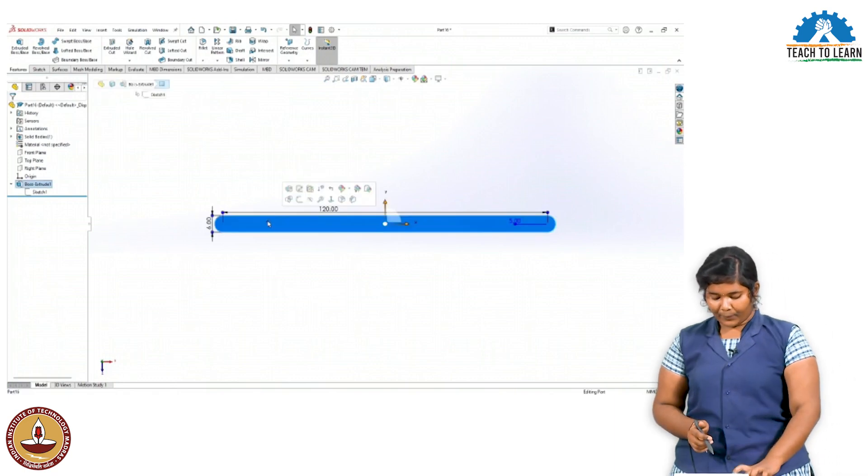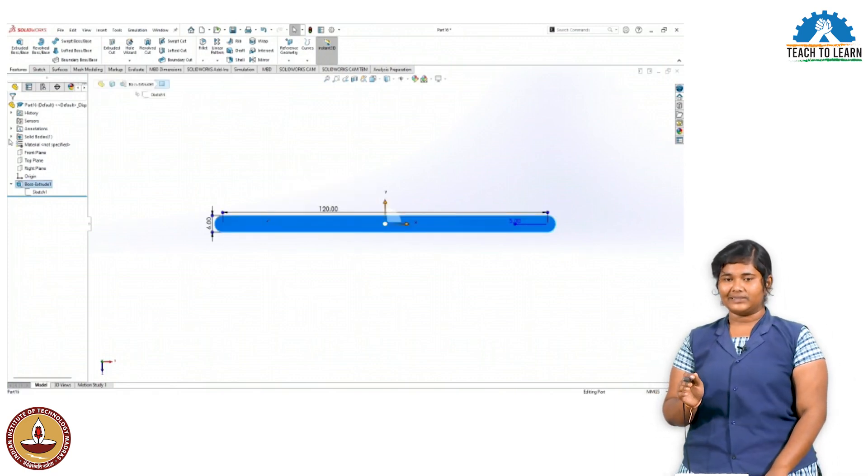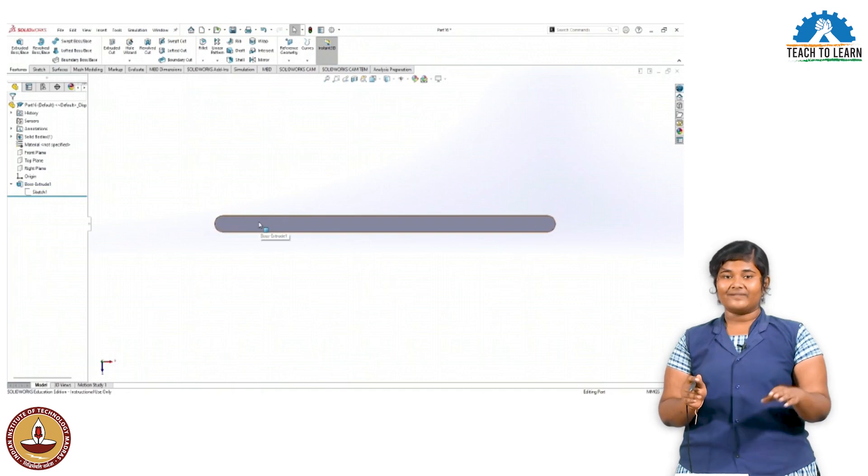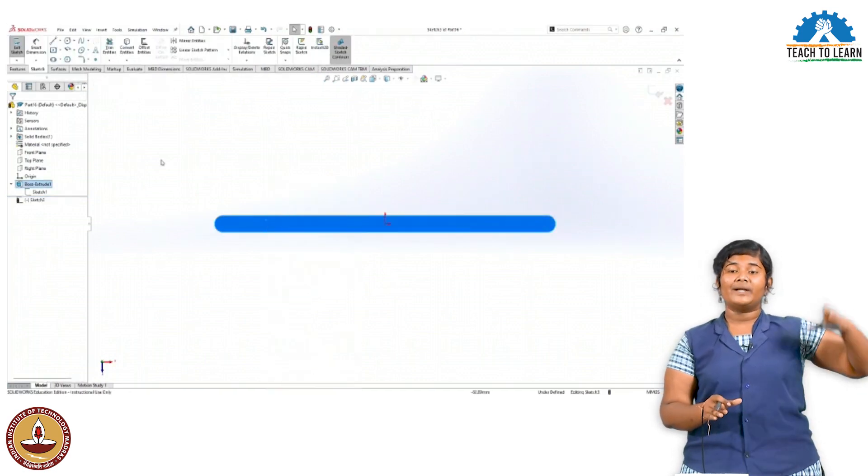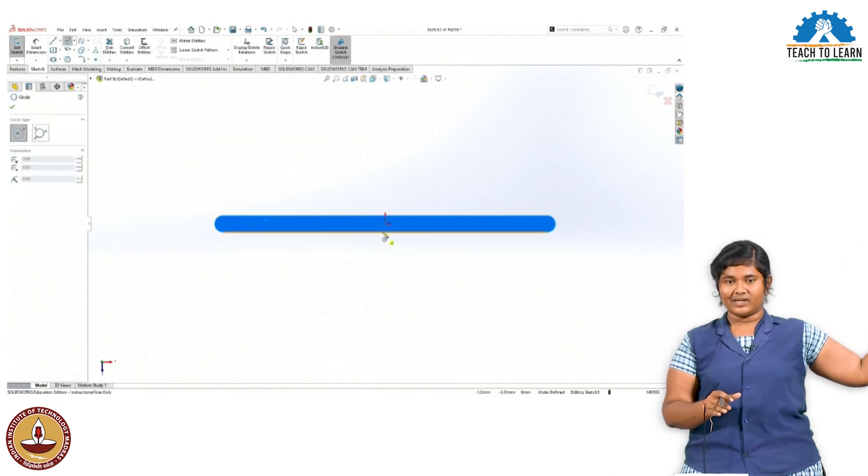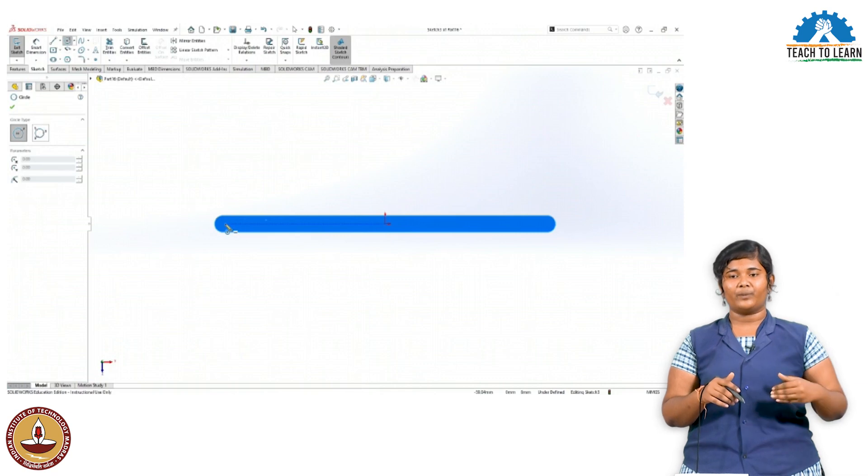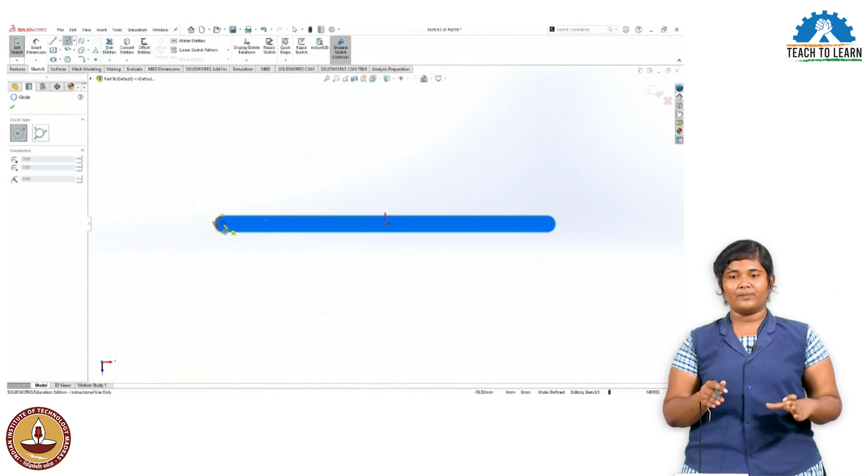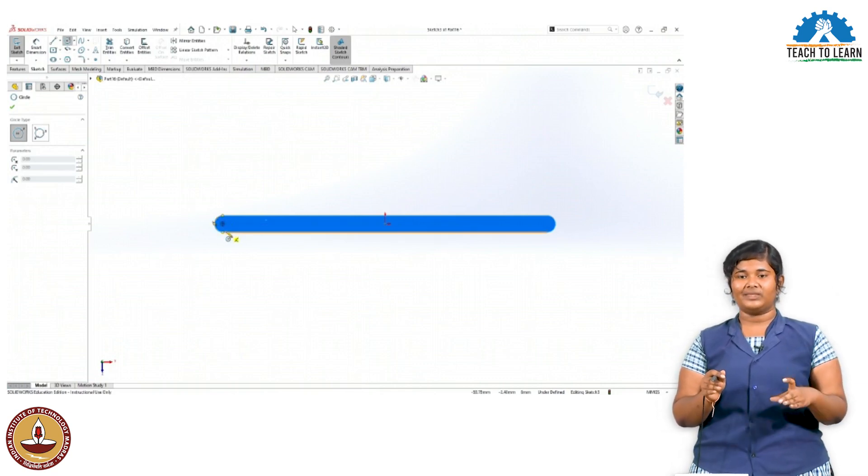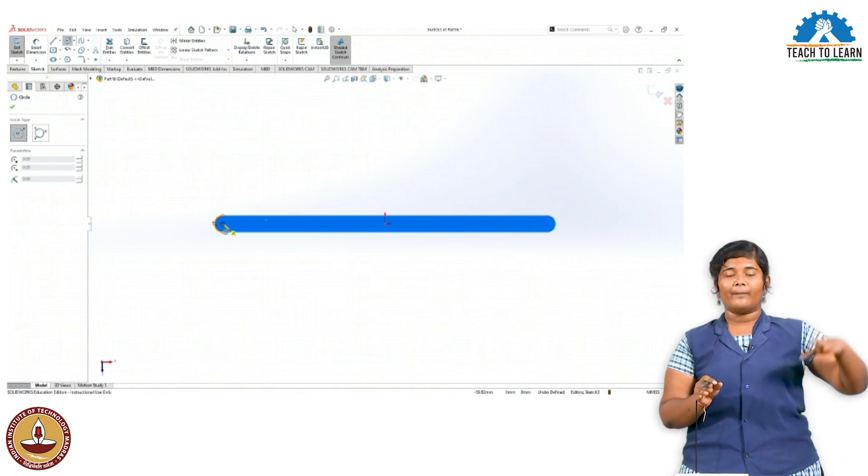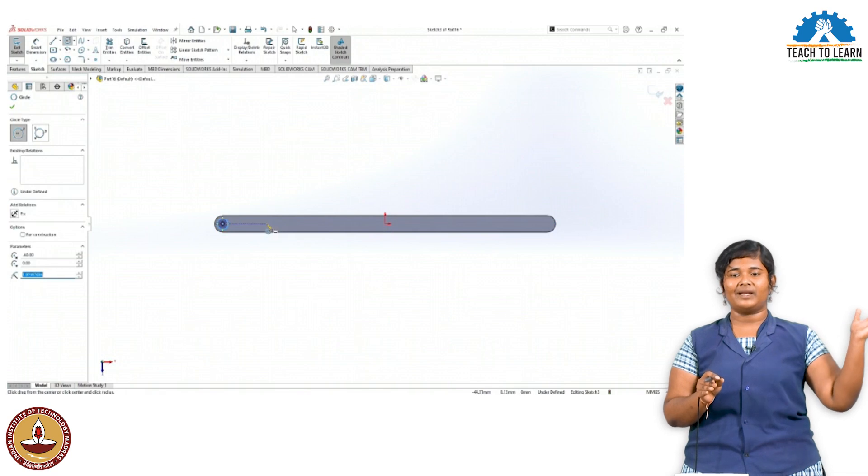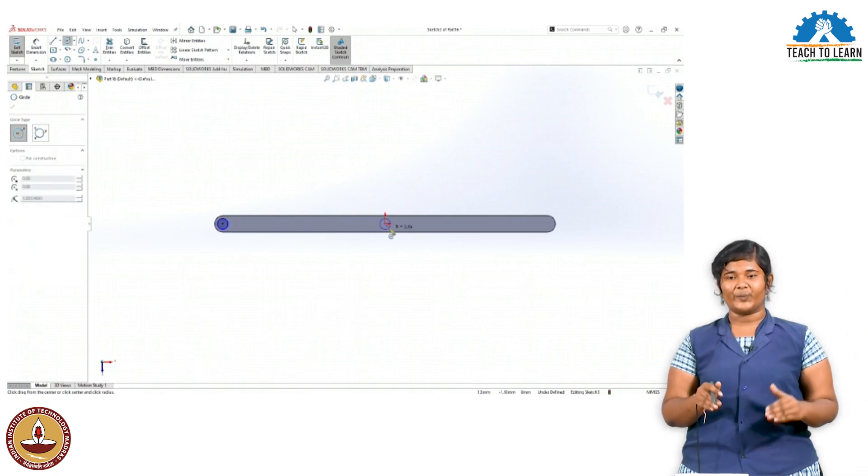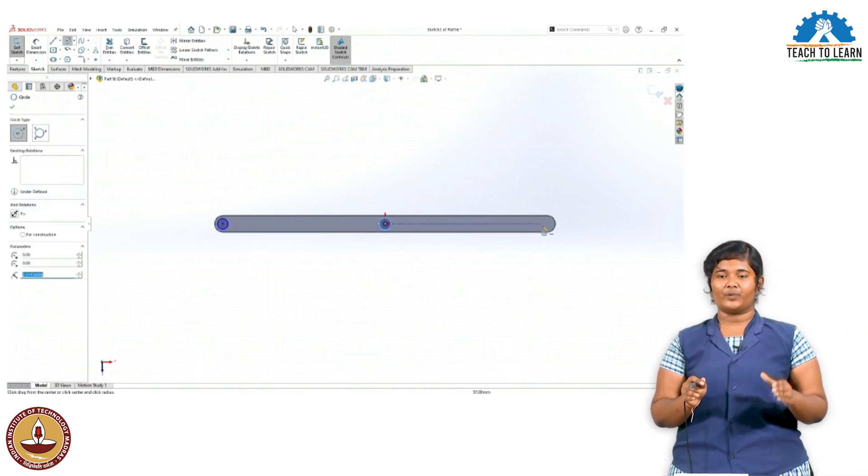The benefit of parametric design is that if I have one model with specific measurements, and I want to change those measurements later, I don't need to redesign everything. For example, if my stretch arm is 12mm but I want it to be 6mm, I can simply change the dimension value. This is the parametric software advantage.